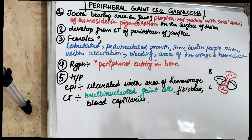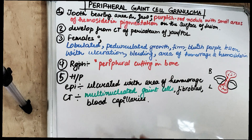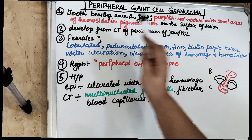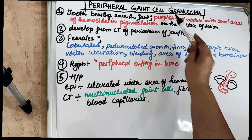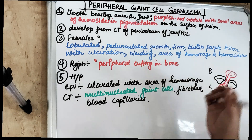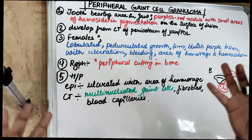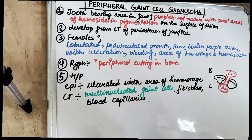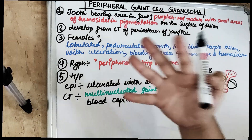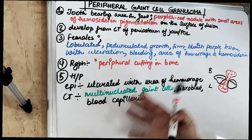Welcome back to the 5 in 5 series, where we cover each topic under 5 headings in 5 minutes. Today's topic is the peripheral giant cell granuloma. This is a granulomatous mass — a purplish-red color mass. We will be covering peripheral giant cell granuloma under 5 headings.